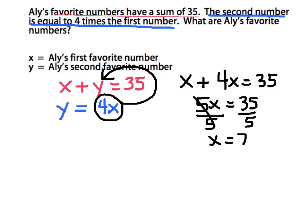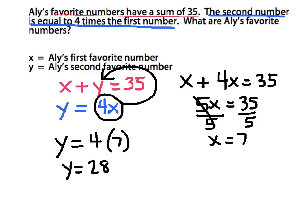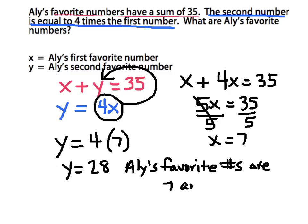Now I can take that and replace it into either of my two equations to figure out my y value. I always recommend going with whichever equation looks easier to work with. The second equation looks easy — y is isolated there. So I'm going to take 4 times my x value to figure out y. The last thing for us to do is answer the question: What are Allie's favorite numbers? Allie's favorite numbers are 7 and 28.